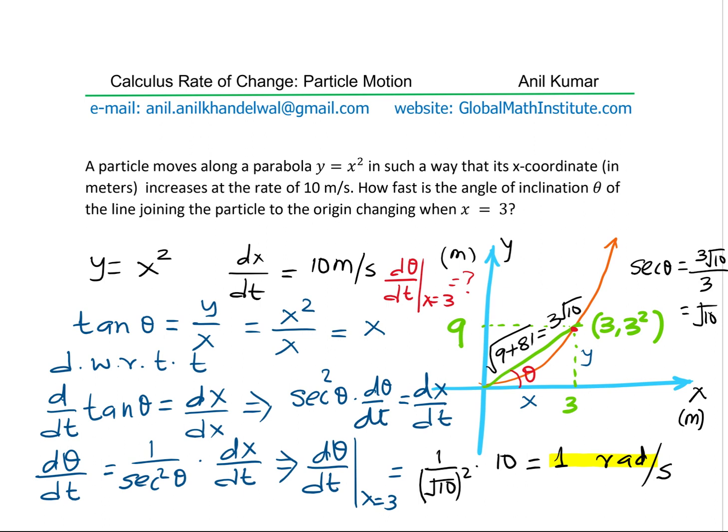Hypotenuse will be square of 3 plus square of 9, which is 9 plus 81, which is 90. Square root of 90 is 9 times 10. Square root of 9 is 3.